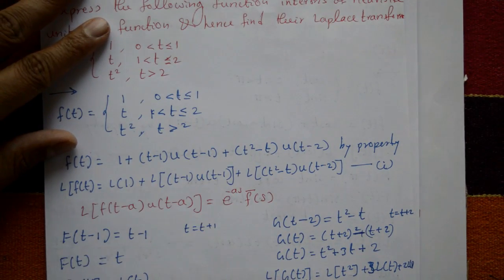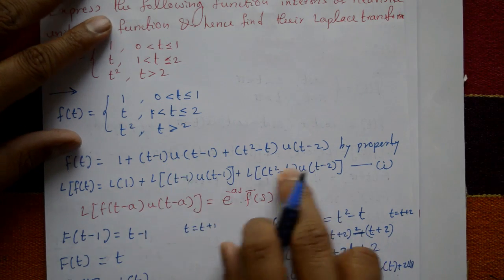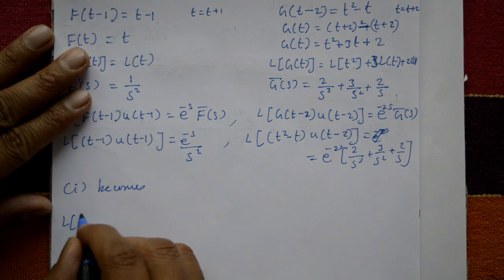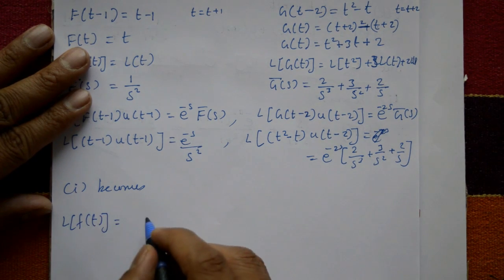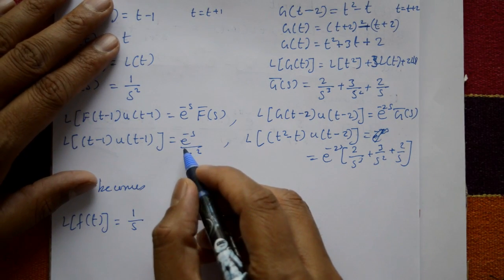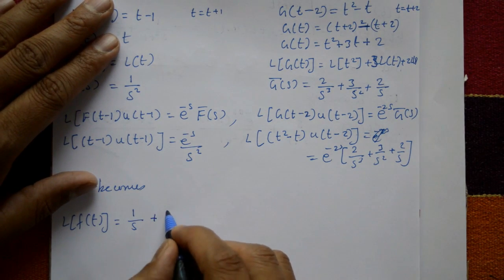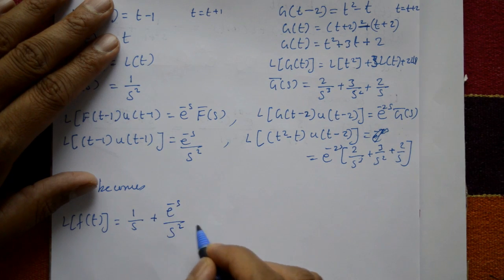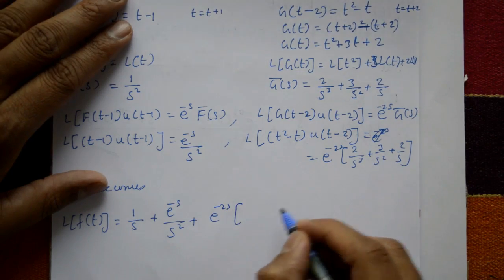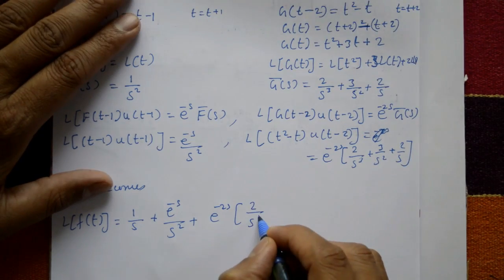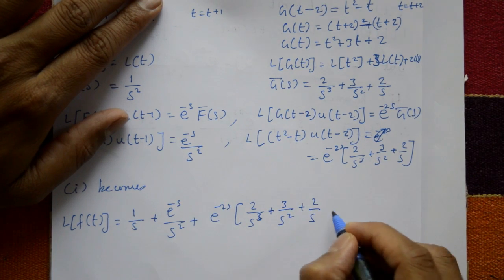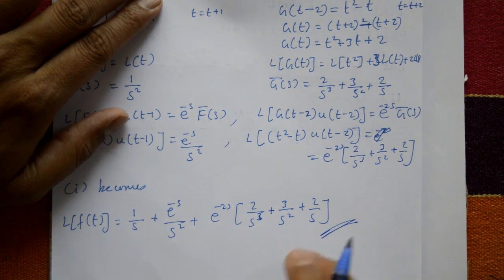Substituting back into equation 1, the final answer is: L{f(t)} = 1/s + e^(−s)/s² + e^(−2s)·(2/s³ + 3/s² + 2/s). This is the required solution.